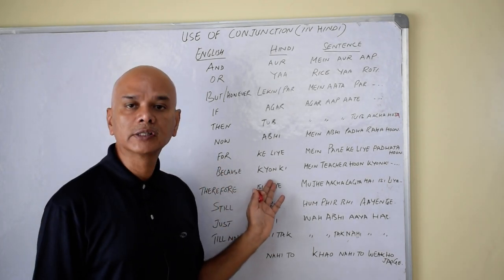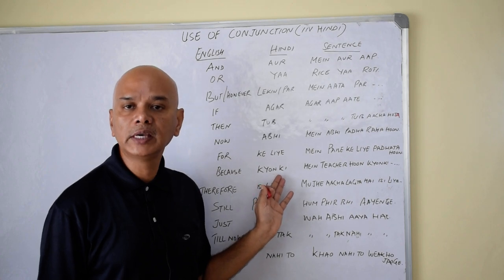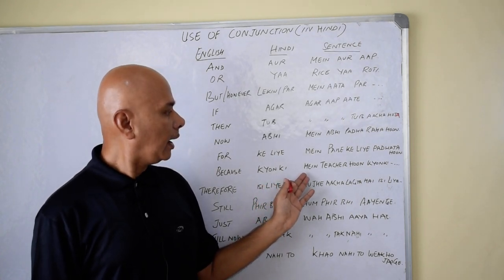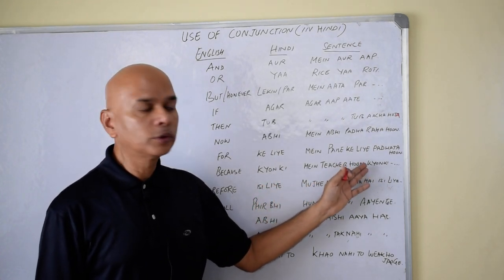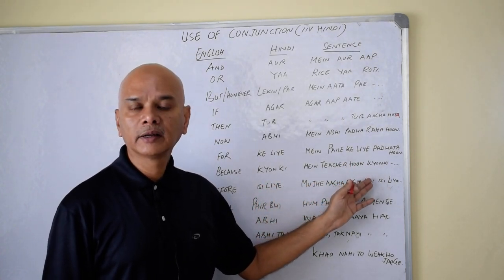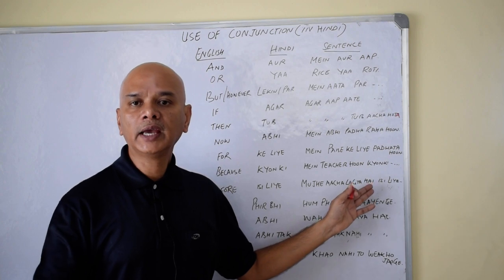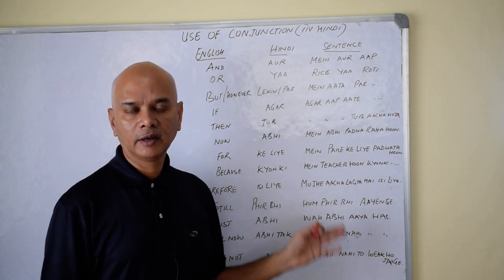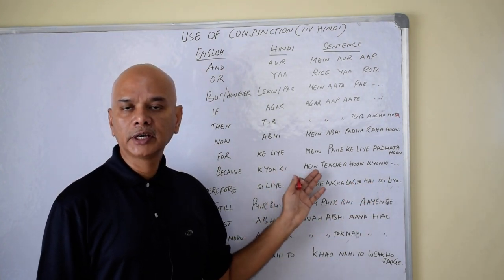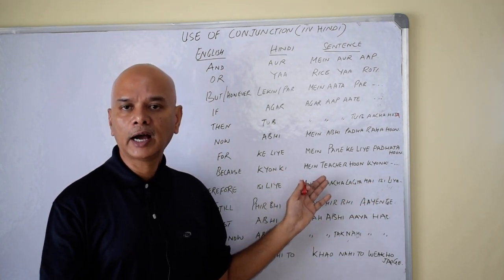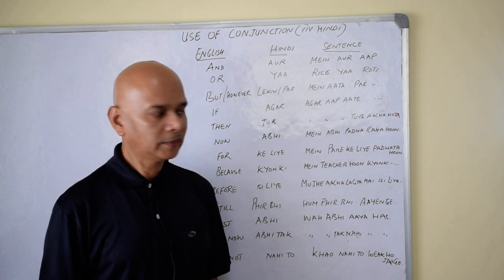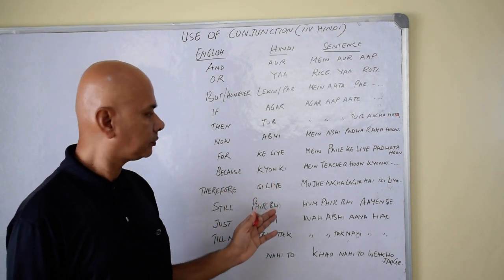The next word is 'because,' which is 'kyunki' in Hindi. For example: Main teacher hun kyunki mujhe achha lagta hai — I am a teacher because I feel happy. 'Because' is 'kyunki.'